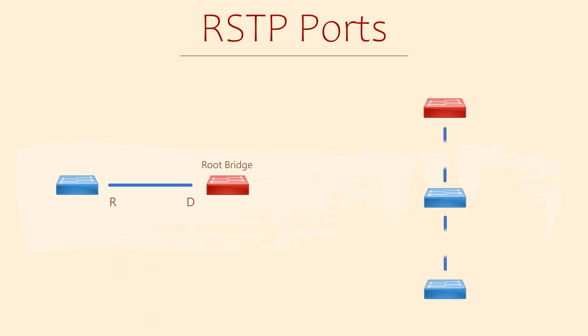Speaking of designated ports, they're the same too. These are ports that point away from the root bridge and can still forward regular traffic. Each network segment can only have one designated port. If there were more than one, there would be a loop.